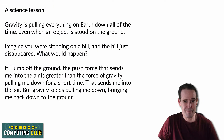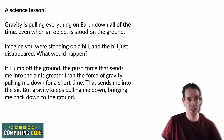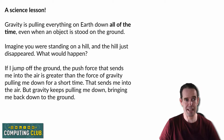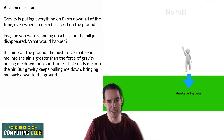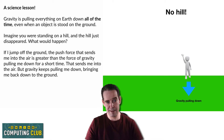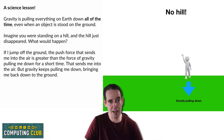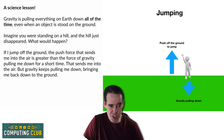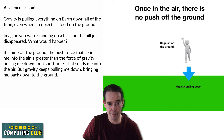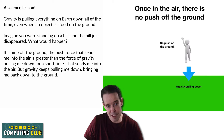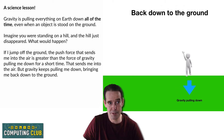This is identical to the way gravity works in the real world. Gravity is pulling everything on Earth down all of the time, even when an object is stood on the ground. Imagine you were standing on a hill and the hill just disappeared — you would start to fall to whatever surface was below where the hill used to be. If I jump off the ground, the push force that sends me into the air is greater than the force of gravity just for a very short time, which sends me up into the air, but then gravity, which is pulling me down all the time, brings me back down to the ground.